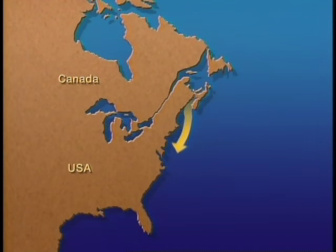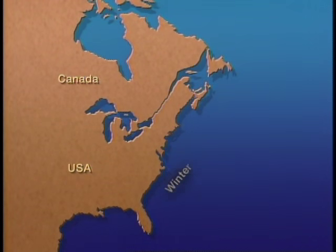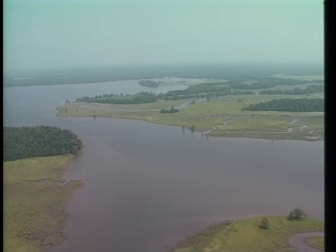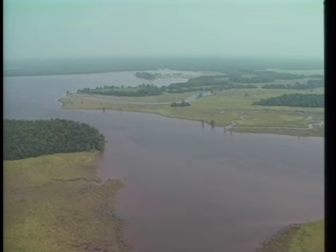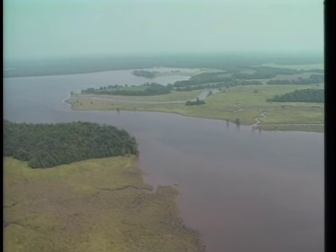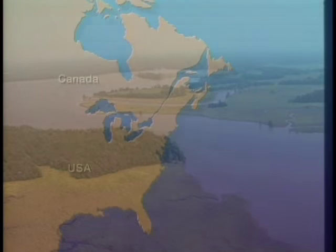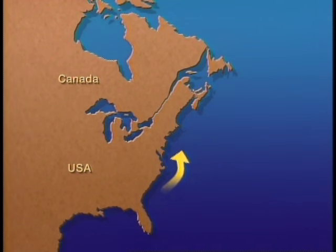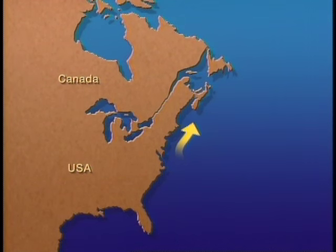They continue to travel south through the fall. Most spend the winter months feeding in the waters off the mid-Atlantic states. Shad born in southern rivers continue on, arriving in Florida and Georgia in time to spawn in January and February. In the spring, the spawning run then moves steadily up the coast — the Carolinas in March, April in Chesapeake Bay, May and June in the northeast.